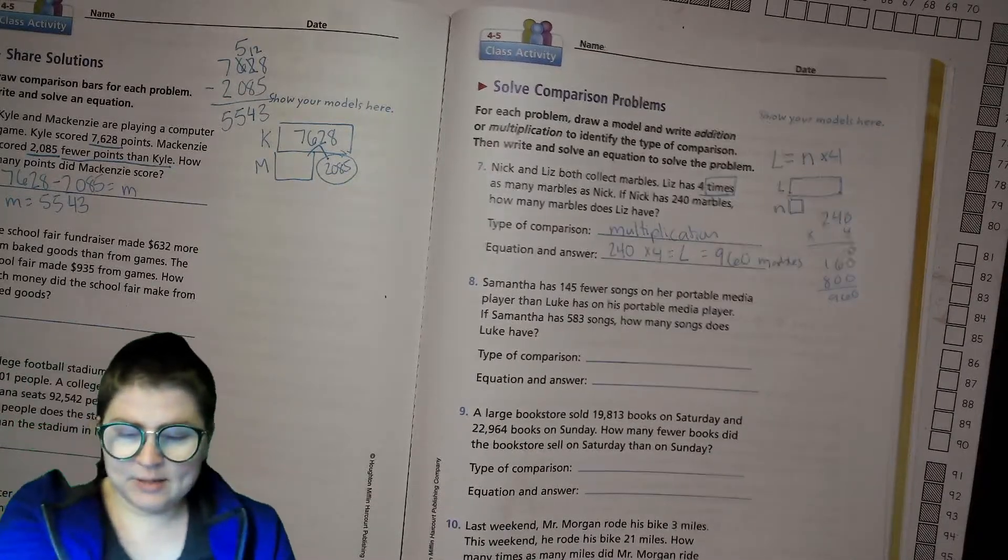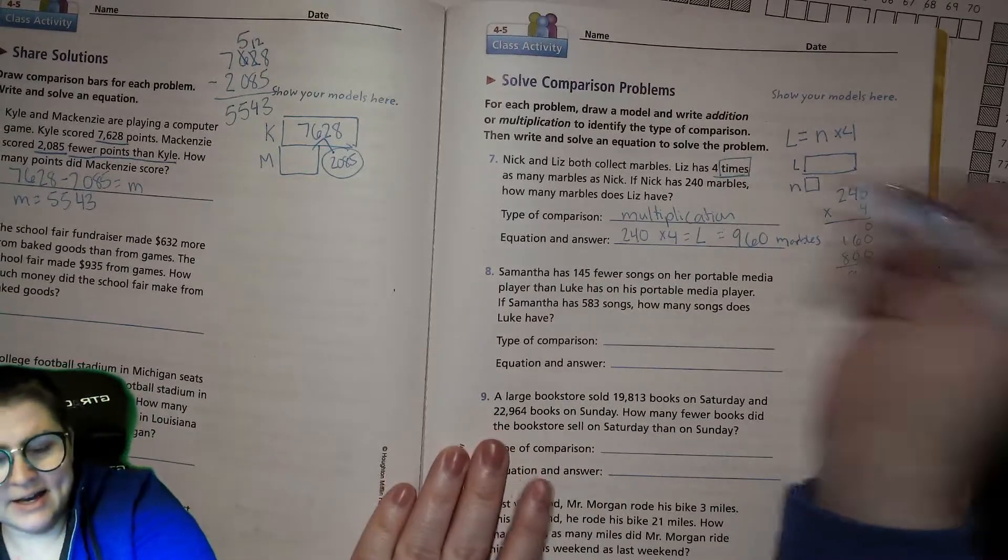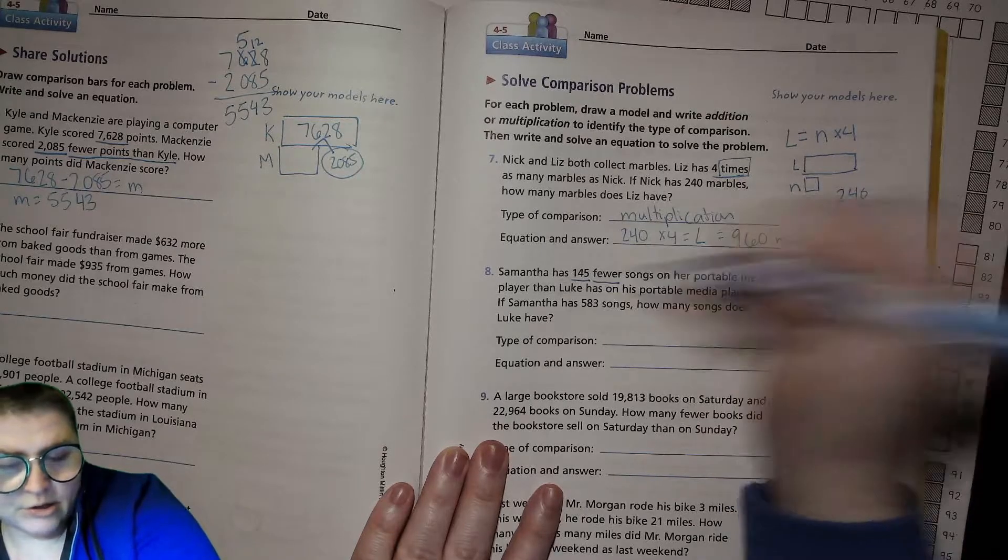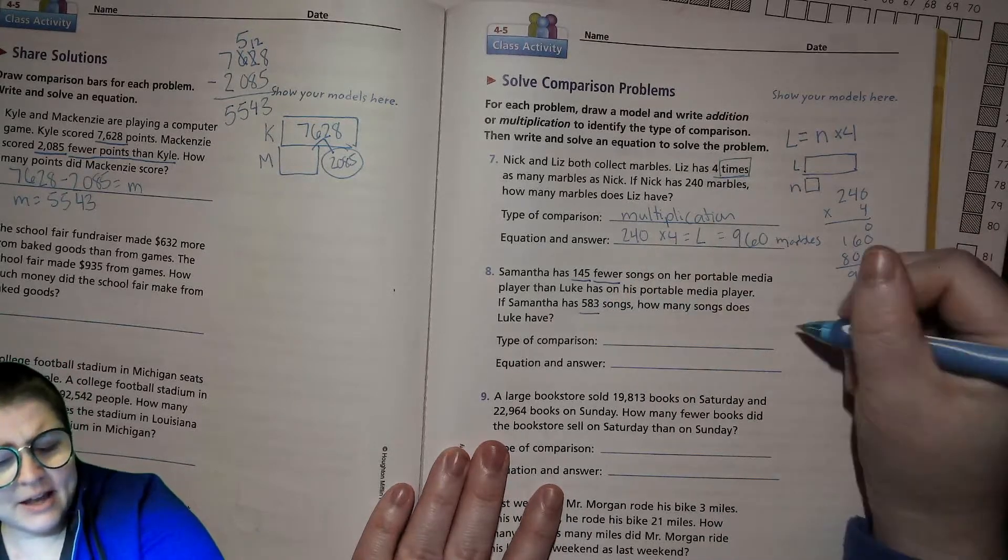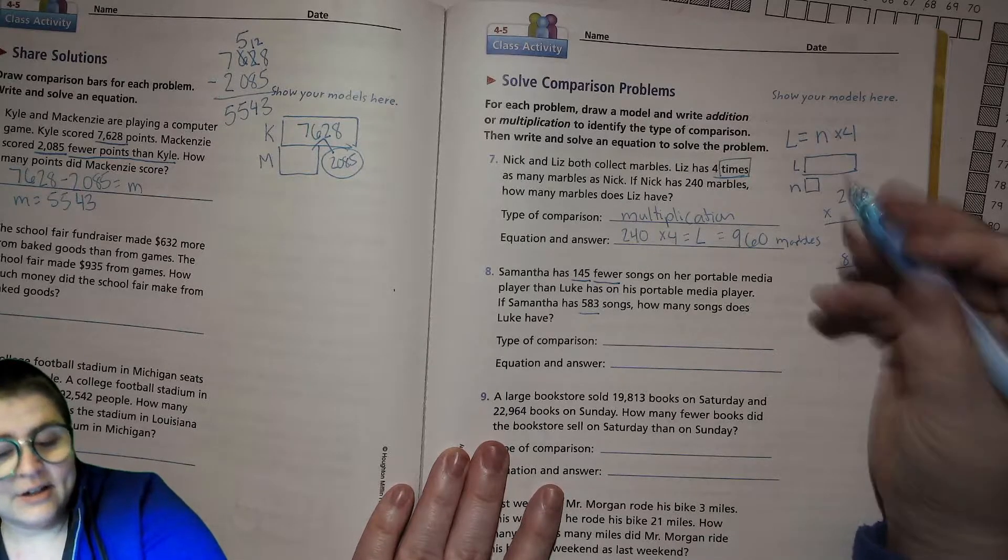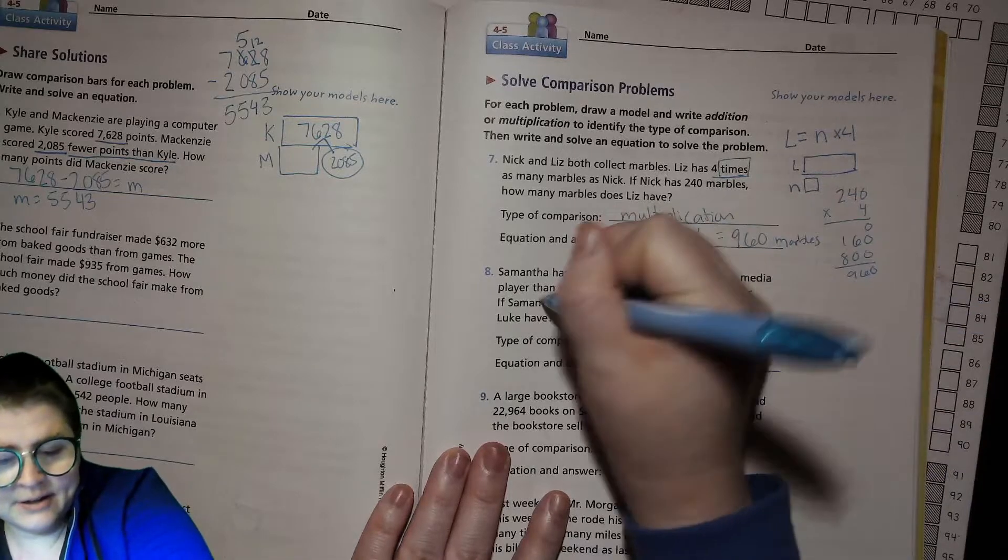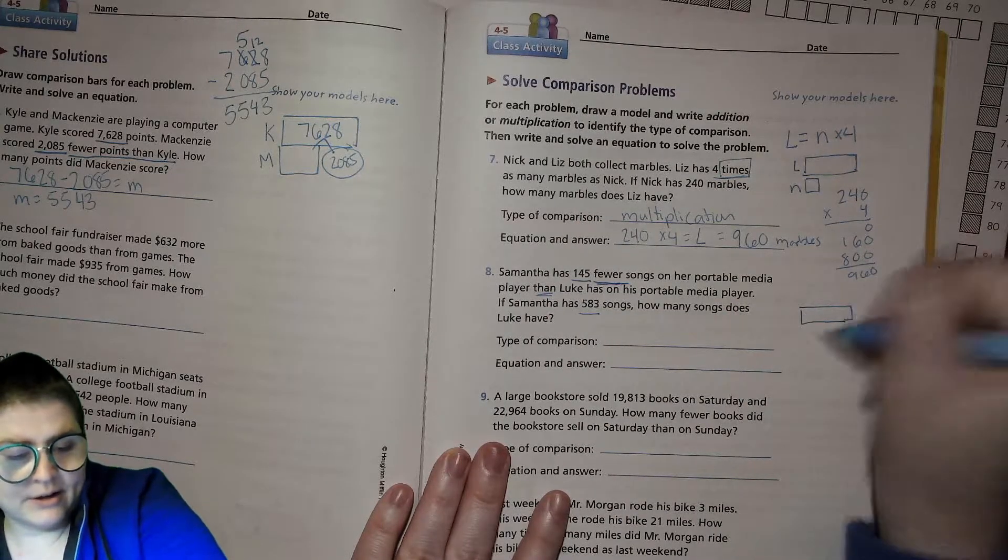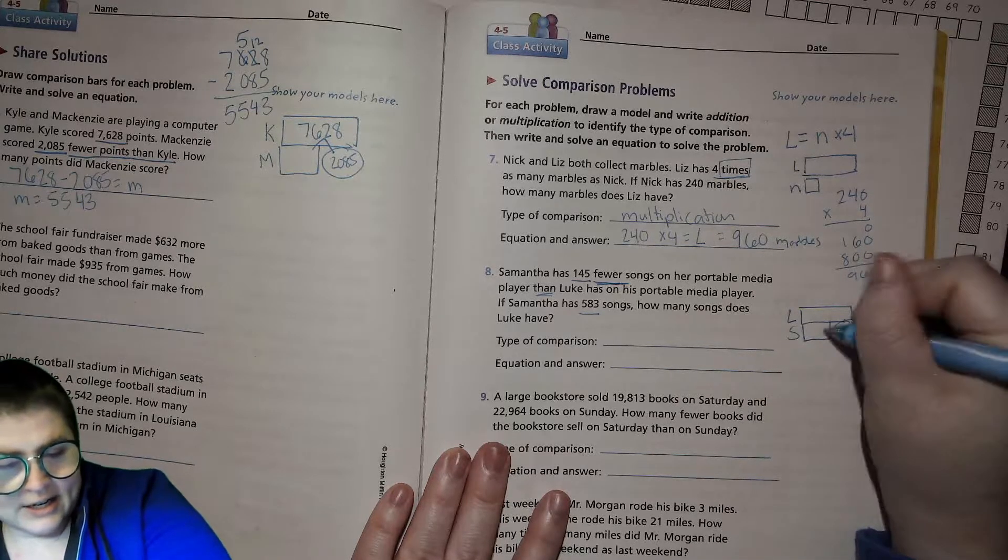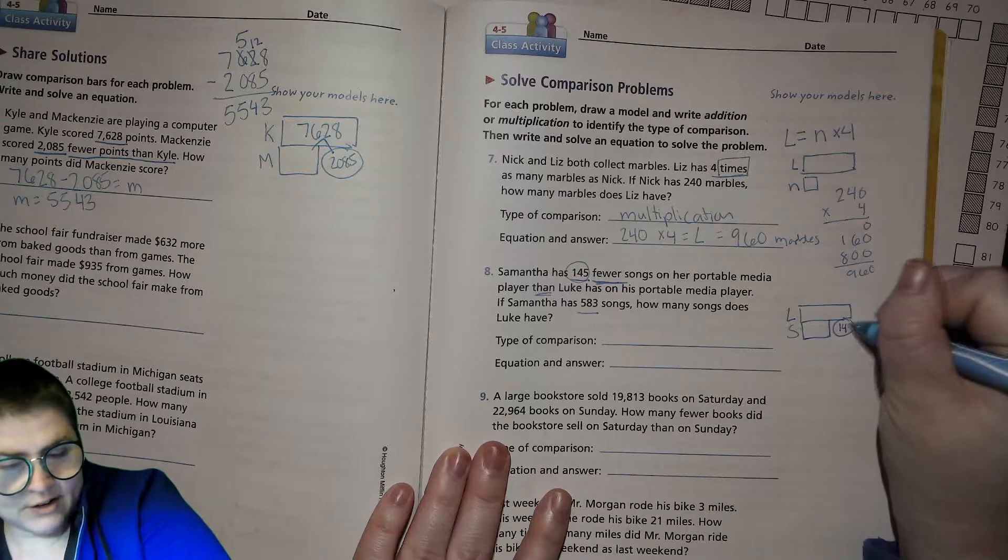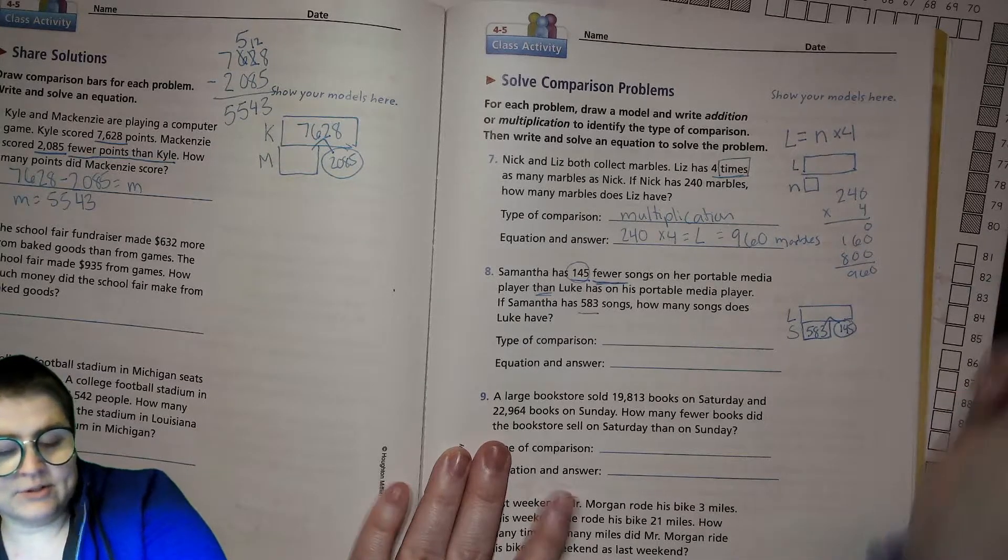I'll do one different one. Let's do number 8. Samantha has 145 fewer songs on her portable media player than Luke has on his. That's like what you would have before you had music on your phone. If Samantha has 583 songs, how many songs does Luke have? What type is this and how do you know? It is 'fewer than' - that indicates that we can use our comparison bar. We know that Samantha has the fewer amount than Luke. She has the difference - this 'fewer than' number is the difference, 145 - and she has 583. If you add those together, you're going to get what Luke has. So this is addition.